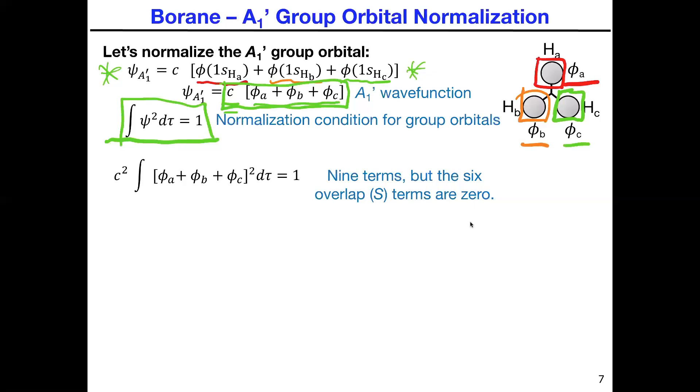The way that this process works is, as you can see, I simply squared this term and substituted it. That whole integral has to be equal to one. Remember, this is a constant, so it doesn't get integrated. If you break it up into its individual components and do that square, squaring it gives you nine terms, but six of them, which are overlap terms, are zero, so we're going to ignore them.